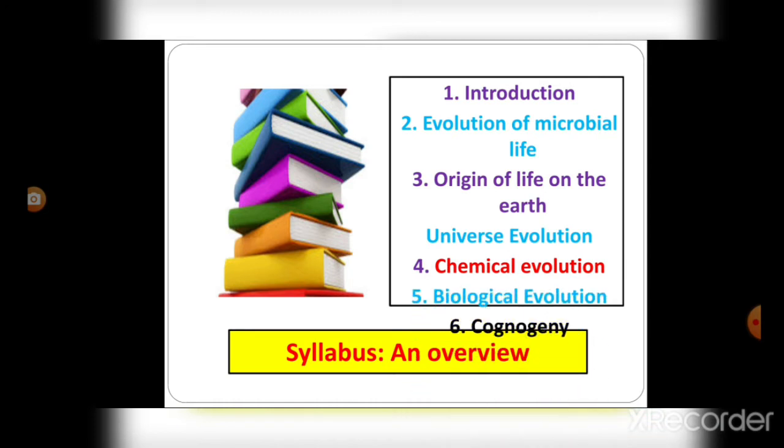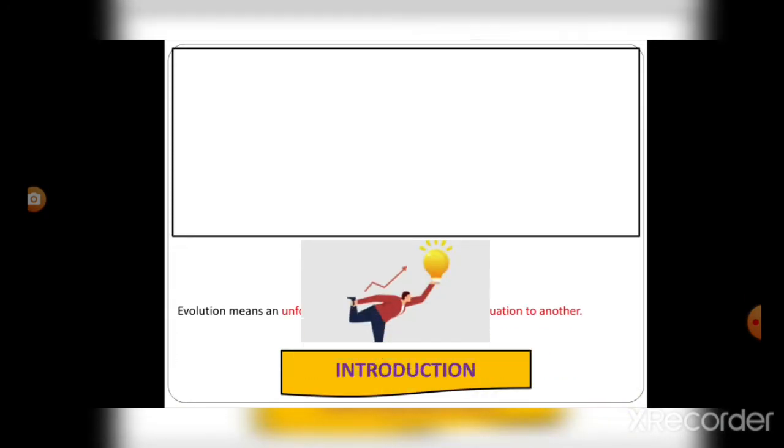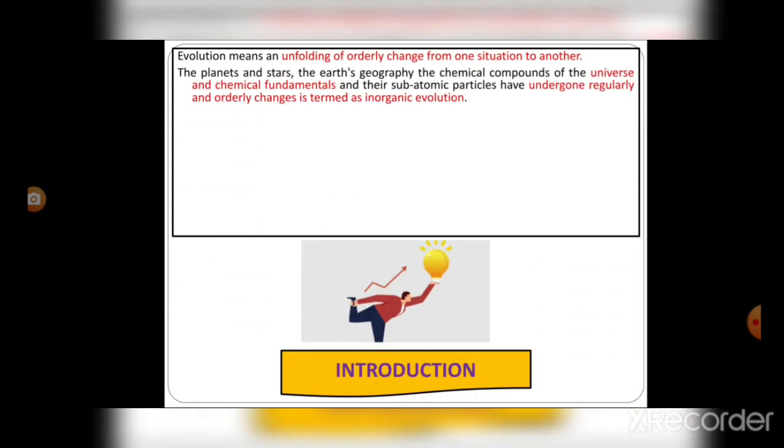First, let's start with the introduction. What is evolution? Evolution means an unfolding of orderly change from one situation to another. The planets and stars, the earth's geography, and the chemical compounds of the universe and their subatomic particles have undergone regular and orderly changes, which is termed as inorganic evolution.